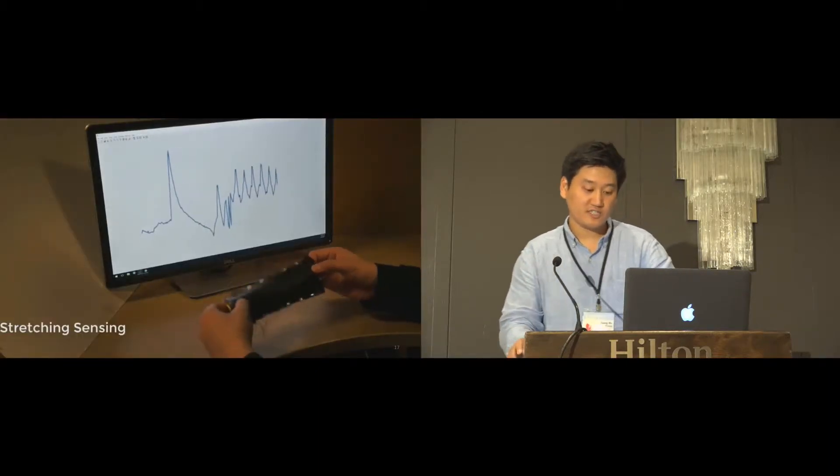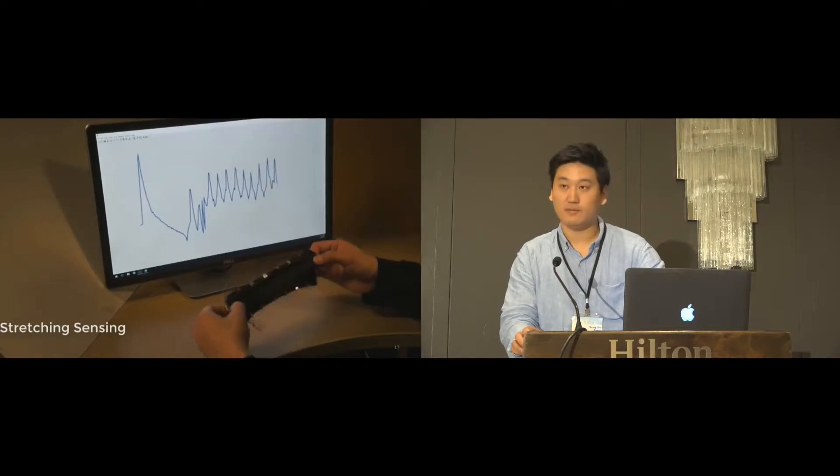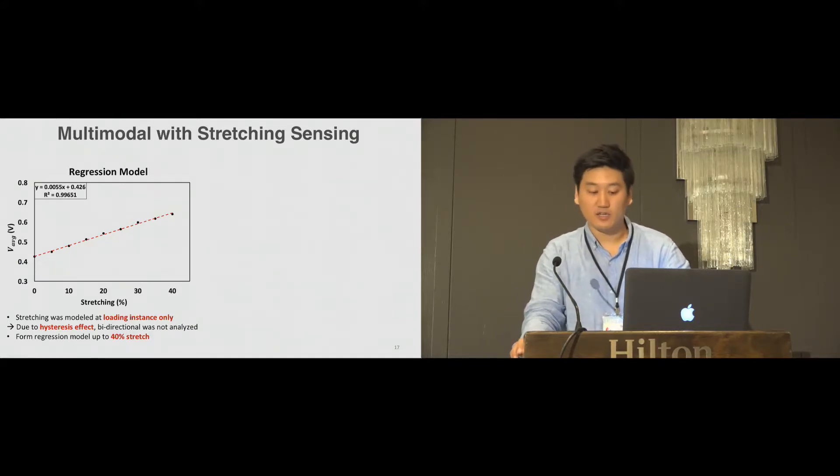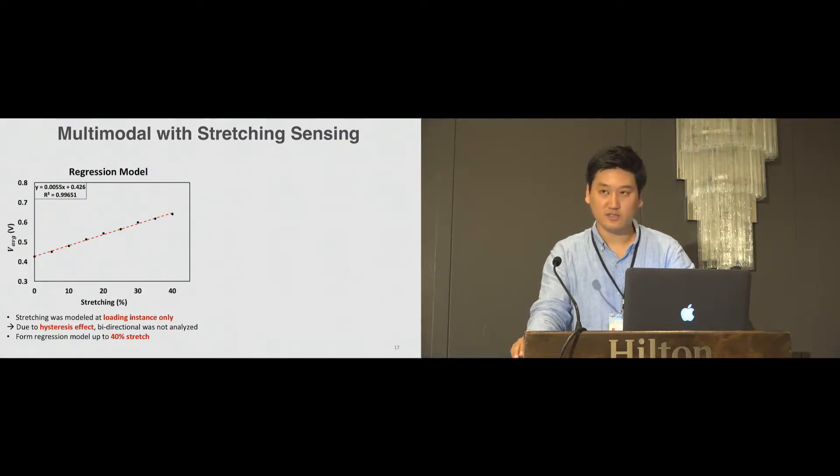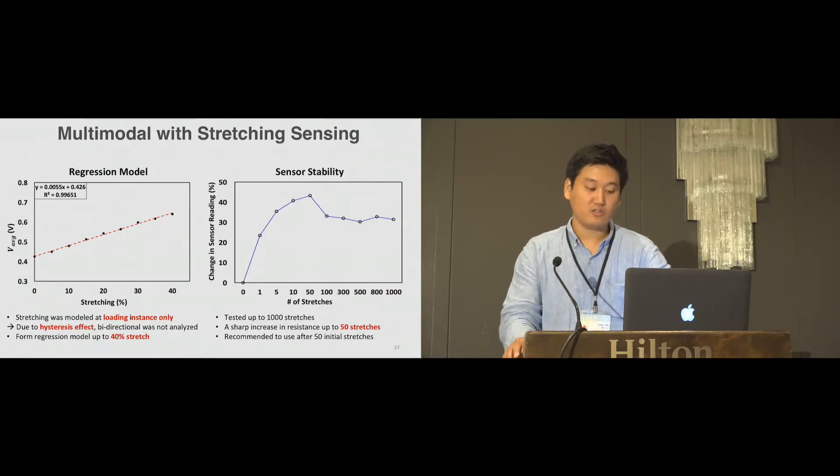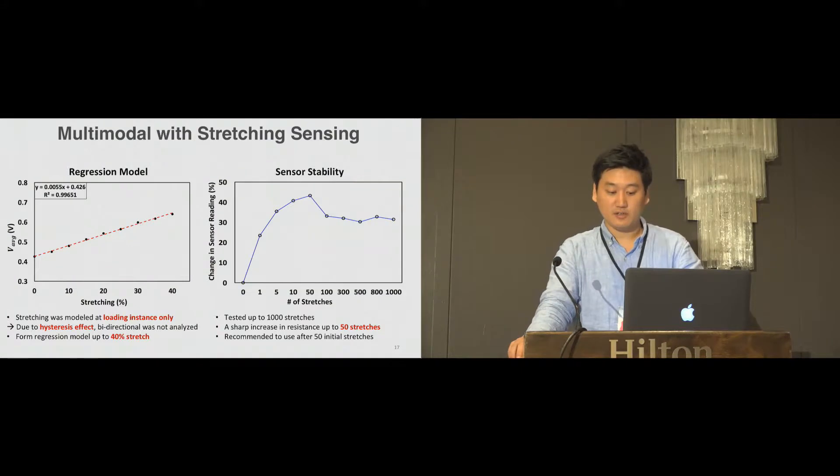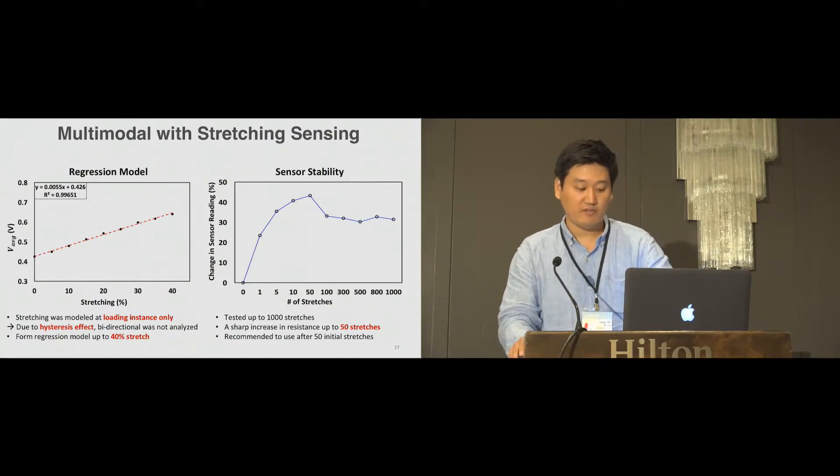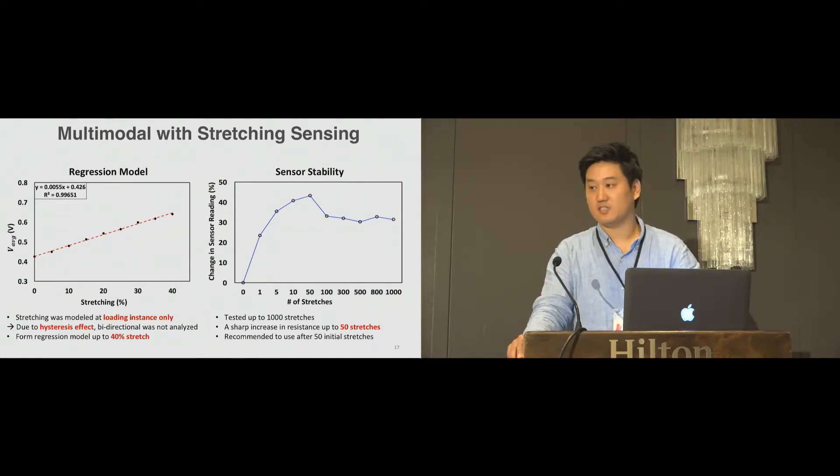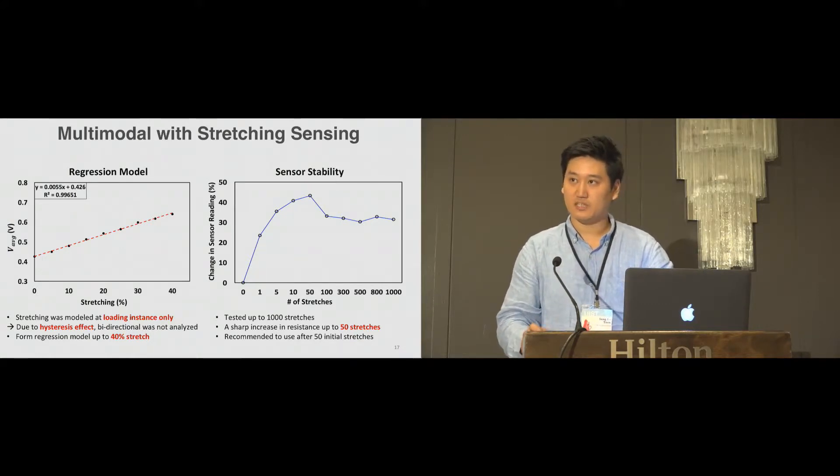We also support stretch sensing where we use a regression model to recognize different levels of stretching. Currently, we only support stretching at loading instances only due to the hysteresis effect, where the sensor values are different at loading and unloading instances. With up to 40% unidirectional stretch, we can form a robust regression model. We also test our sensors for stability. We tested the sensor for 2,000 stretches and found there is a sharp increase in resistance in the first 50 stretches after initial fabrication. As found in previous research, this is due to the breakdown of the internal carbon black network after initial calibration.